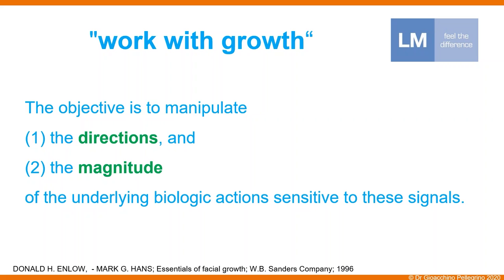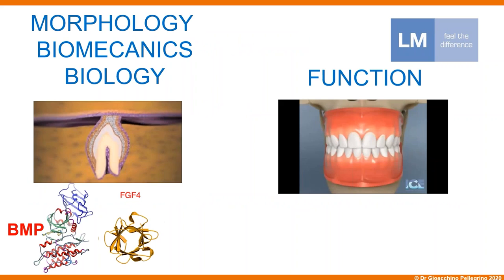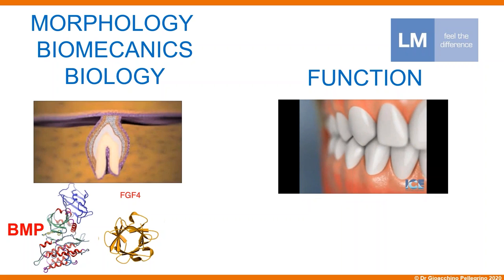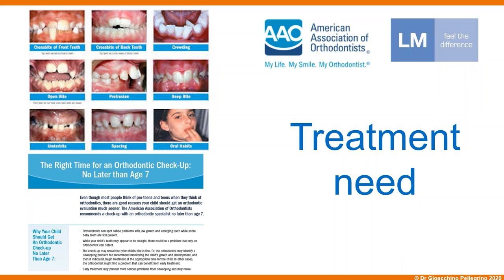We can approach the concept of working with growth. If we want to use this concept to manage malocclusion while teeth are growing, we need to manipulate and manage the direction and the amount of this growth. We can use different signals that work from a biological point of view. We will need to use the morphology and biology of the teeth growing inside the mouth, and the function of the teeth touching each other between the different arches, so that we can have several signals coming from the occlusion to the brain and to the muscles.